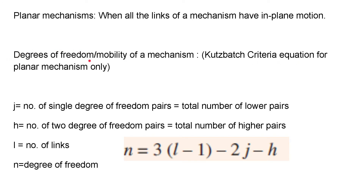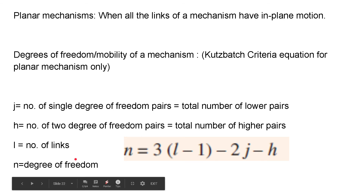The Kutzbach criteria is only applicable for planar mechanisms. Here j means the number of single-degree-of-freedom pairs (total number of lower pairs), h means the number of two-degree-of-freedom pairs (total number of higher pairs), and l is the number of links. When calculations get complex, j can be taken as single-DOF pairs and h as two-DOF pairs, but stick to the convention: don't mix lower-pair and two-DOF definitions.